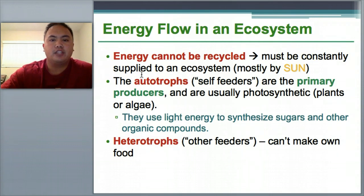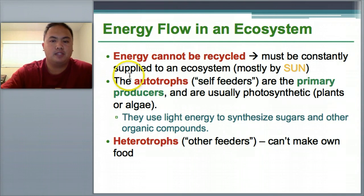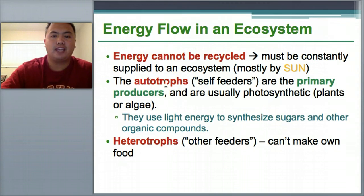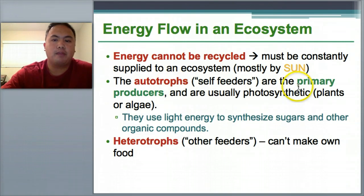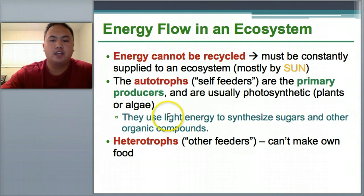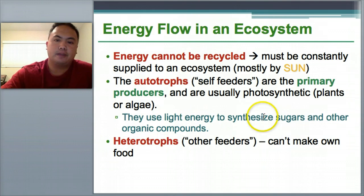These energy sources have their own names. The self-feeders are called autotrophs — 'auto' like automobile, meaning it happens automatically, and 'troph' meaning energy — so they automatically make their own energy. They're called primary producers and are usually photosynthetic, meaning plants or algae. They use light energy to make sugars and feed themselves.